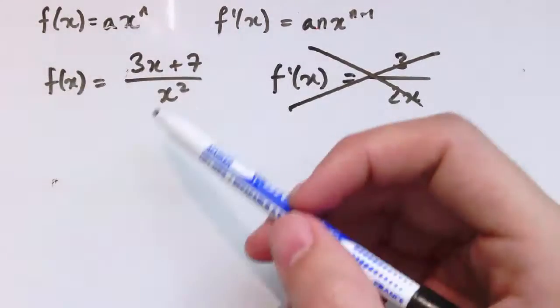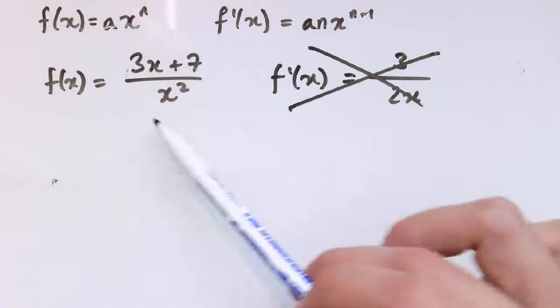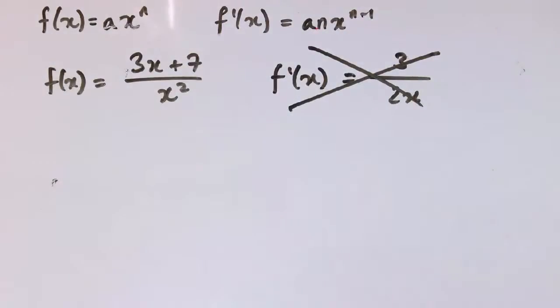There's no rule that says if you have a quotient of functions that the derivative is just the derivative of the top divided by the derivative of the bottom. There is a formula, but it's much more complicated, and we'll come to it later.